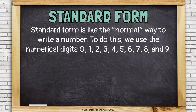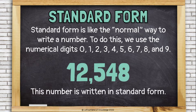Standard Form is like the normal way to write a number. To do this, we use the numerical digits 0, 1, 2, 3, 4, 5, 6, 7, 8, and 9. 12,548 is written in standard form like this: 1, 2, 5, 4, 8.